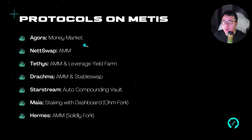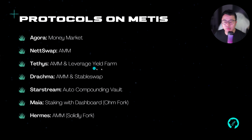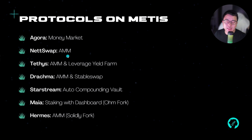Right now these are the available popular protocols on MATIS. Agora is the money market. NetSwap is your standard official AMM swap — think of it like Uniswap, very safe and standard. Then you have Tethis, which is like the second official AMM swap but with more features including a built-in leverage yield farm — think of it like SushiSwap, where they try to create more stuff. From a price action perspective, NetSwap isn't doing very well, but Tethis is actually performing pretty decently, showing that innovation has a premium in the MATIS ecosystem.